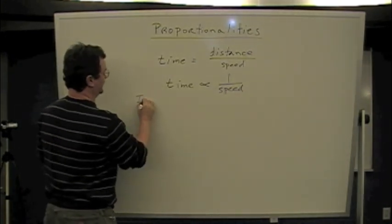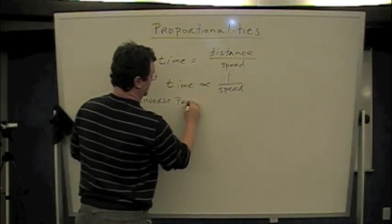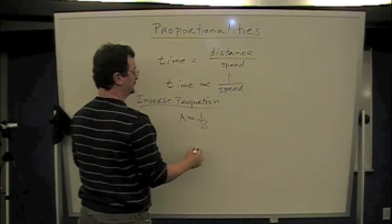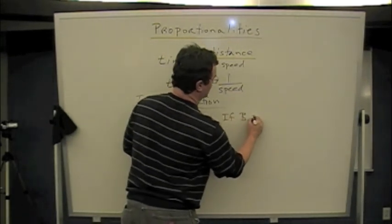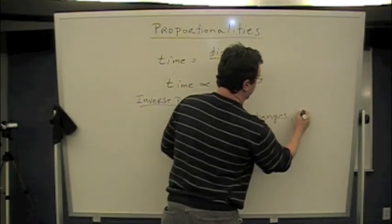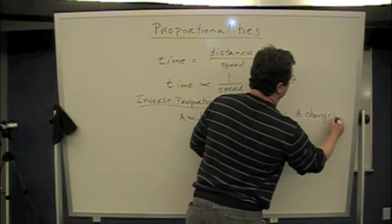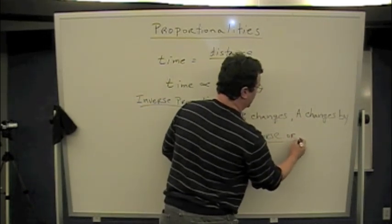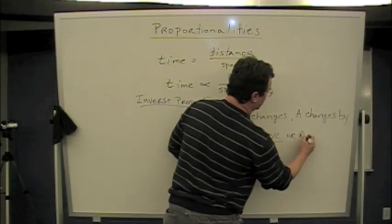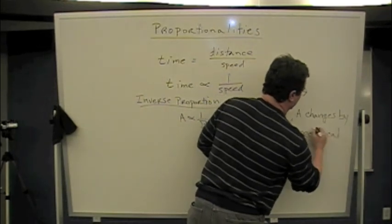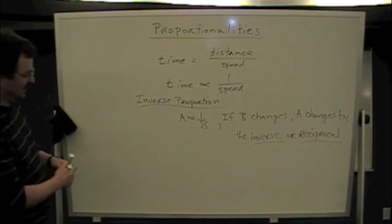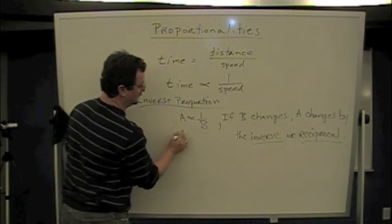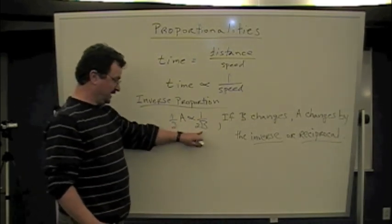An inverse proportion, A is inversely proportional to B, which says that if B changes, then A changes by the inverse, or the reciprocal. So, in other words, if B tripled, A would be reduced to one-third. If B doubled, then A would be cut to one-half. So whenever B gets bigger, A gets smaller.